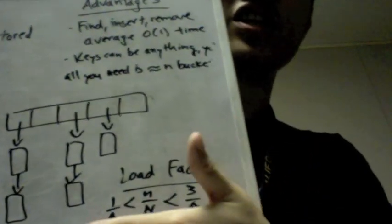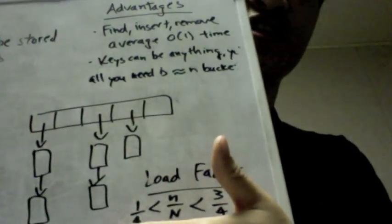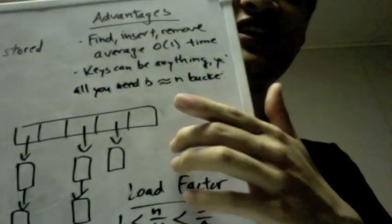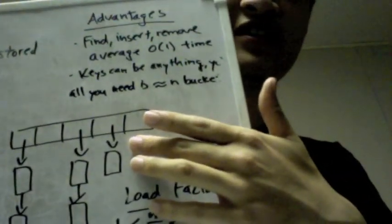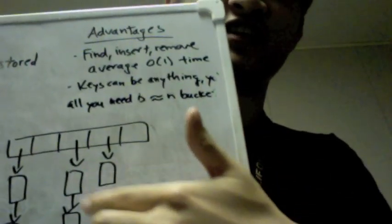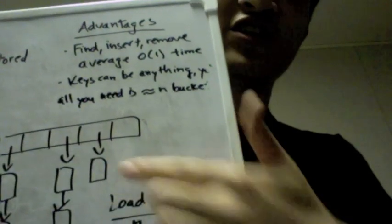So you can use any data structure to represent this chaining. For instance, if you have numerical keys, singly linked lists might be a bit slower. You can perhaps implement another tree. But for the most part, singly linked lists are a logical choice.